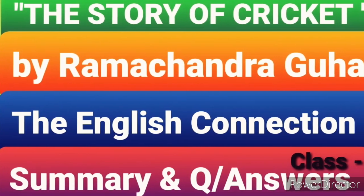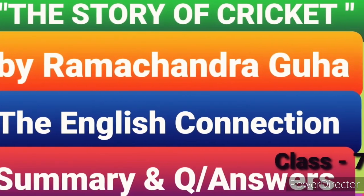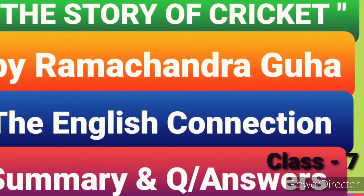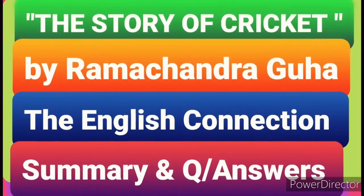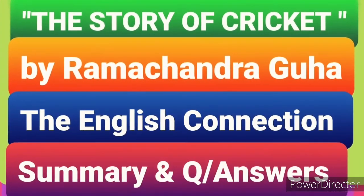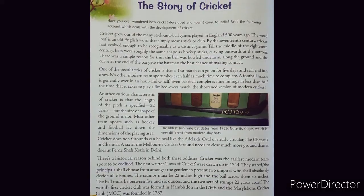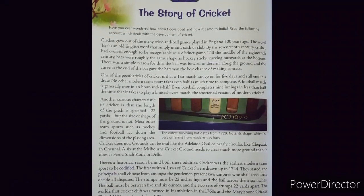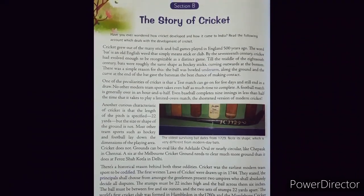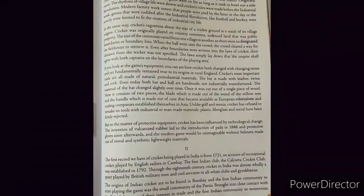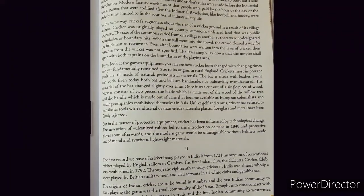Welcome to all of you. In this video we are going to know about the chapter 'The Story of Cricket' written by Ramchandra Guha from the book 'The English Connection'. This chapter is divided into two parts: in the first part we will know how cricket developed, and in the second part we will know how cricket came to India.